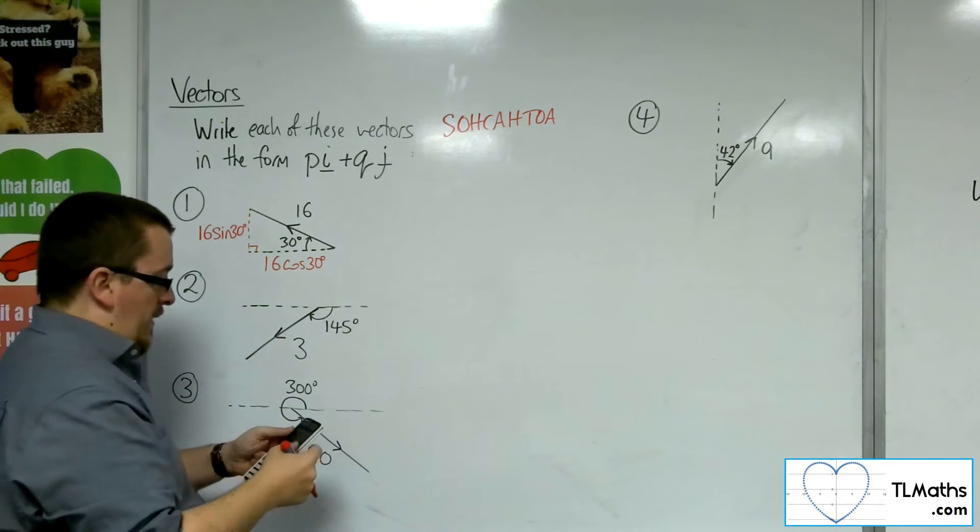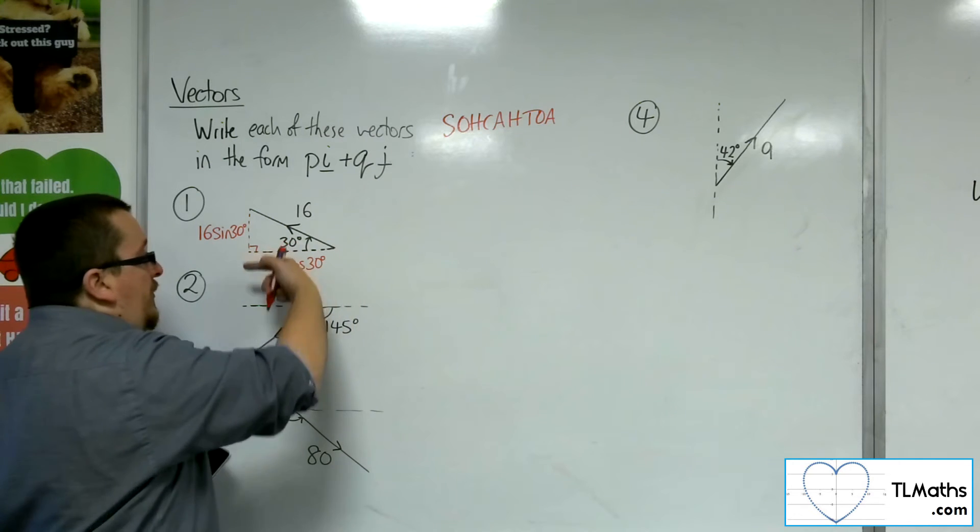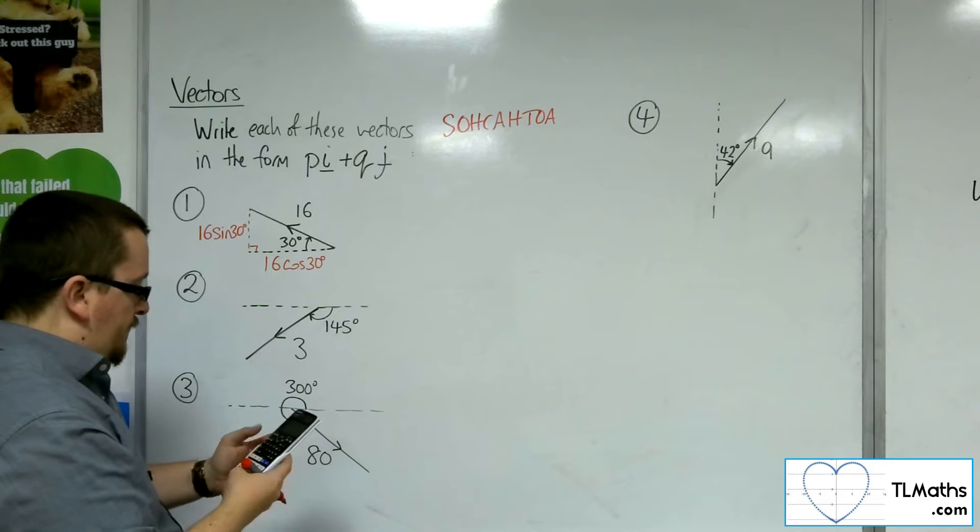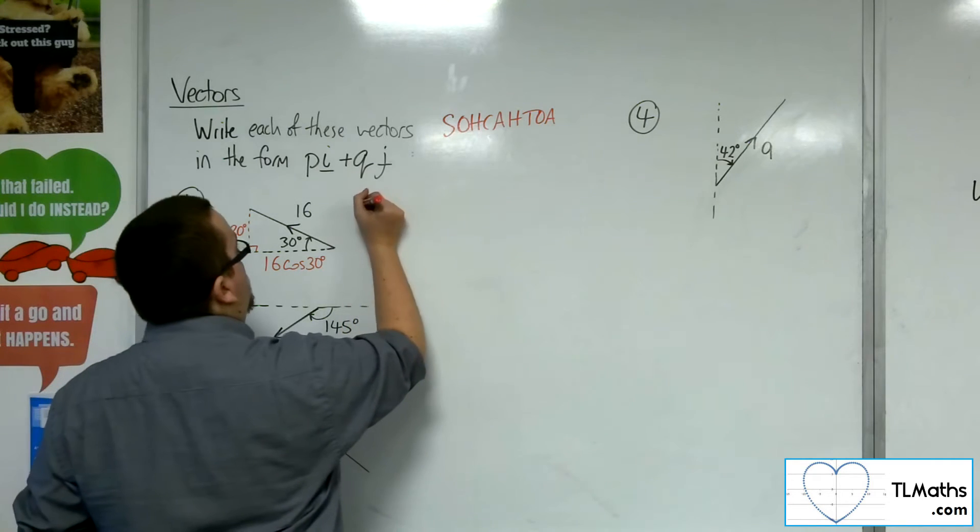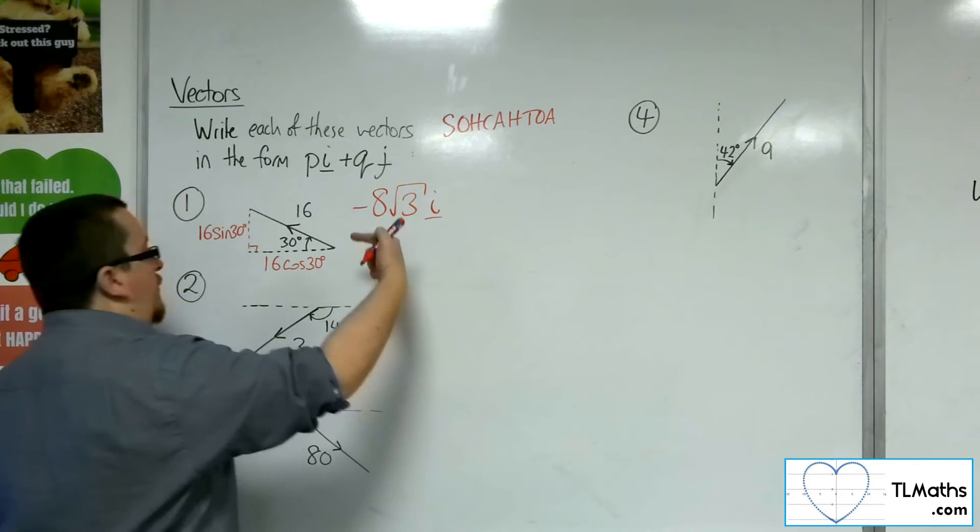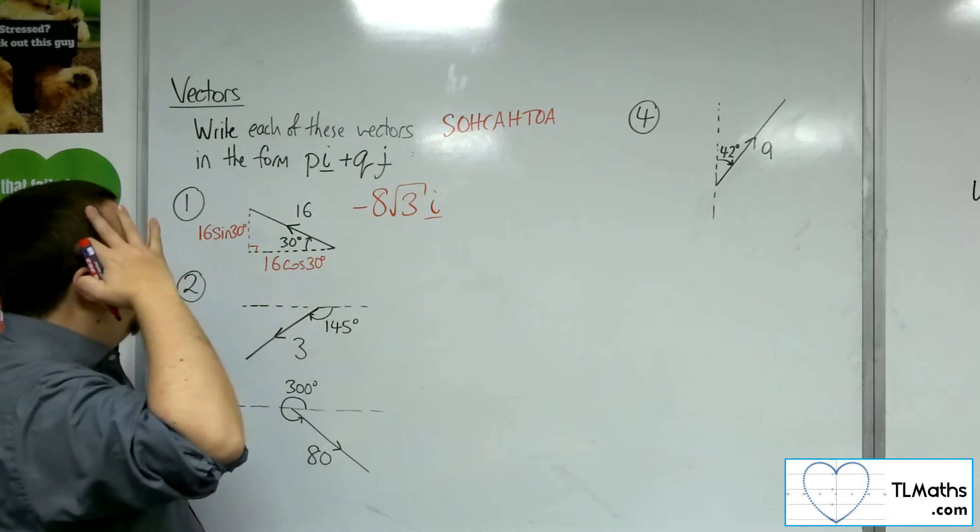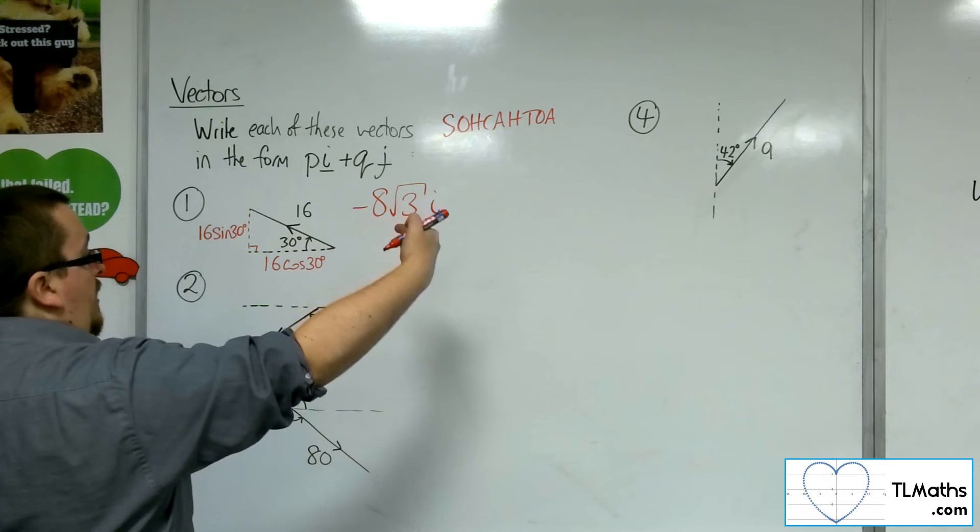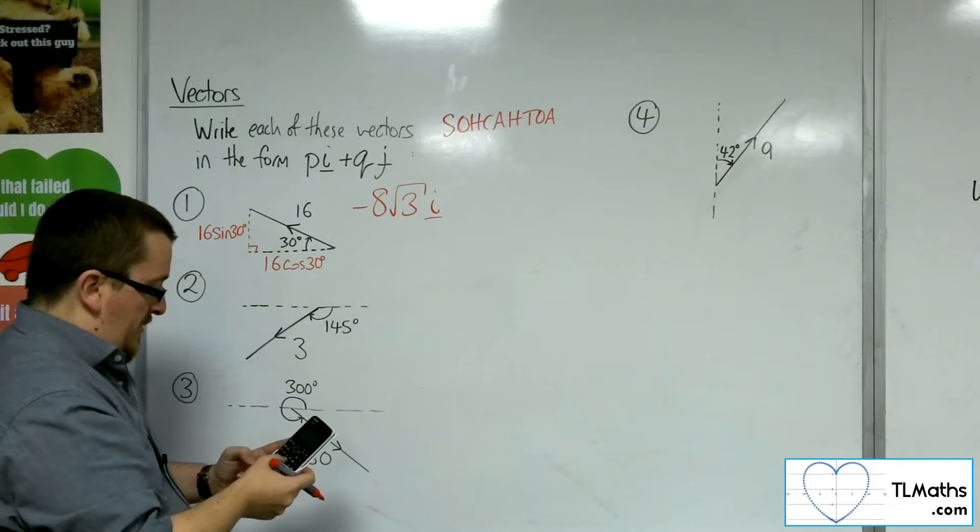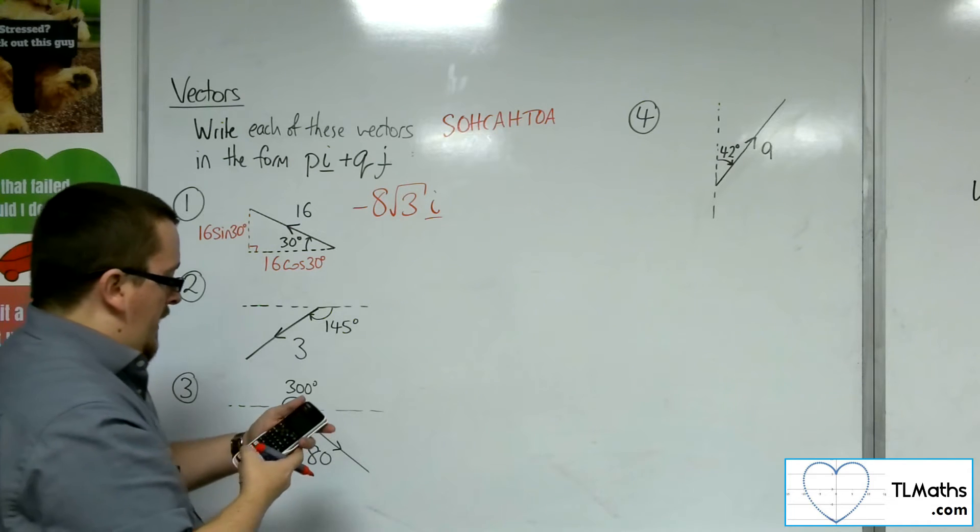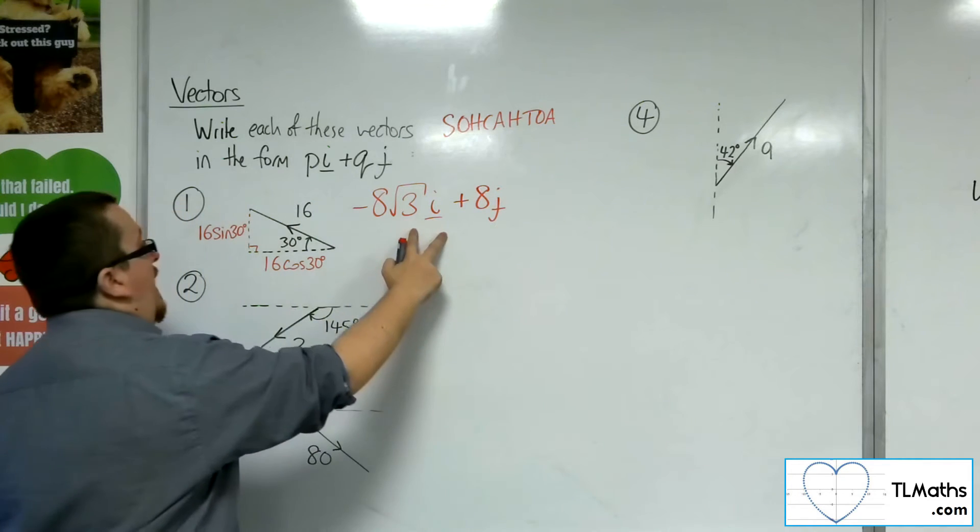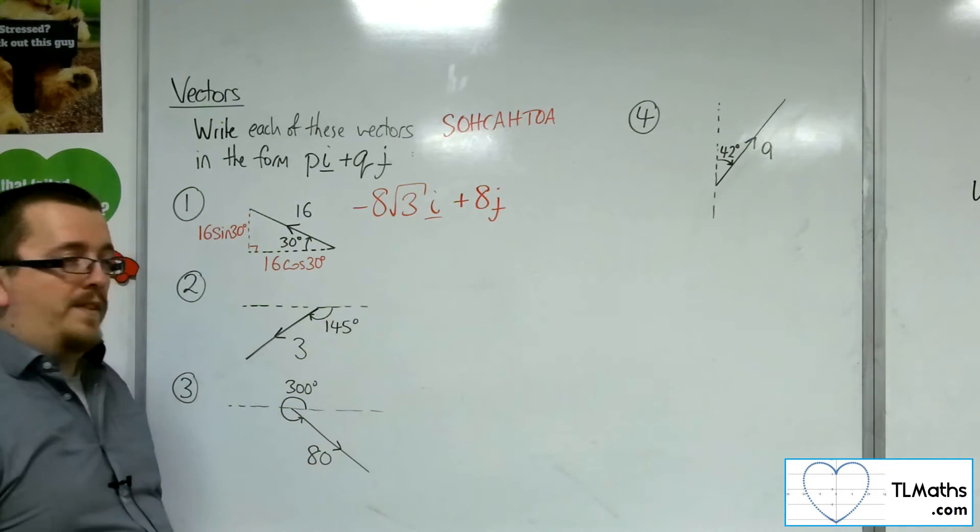So that means the opposite side is 16 times sine of 30. So this vector I can write as minus 16 cosine of 30, which is 8 root 3, so minus 8 root 3i, okay, because I'm going to the left. Make sure you don't make the mistake of just writing down the positive answer, going to the left, and then we're going vertically up. So 16 times sine of 30 is 8, so that's plus 8j. And so that is the component form for that angle.